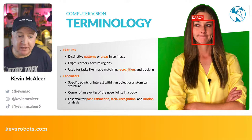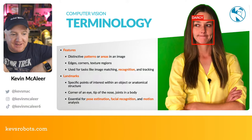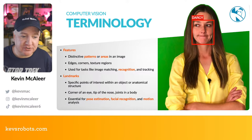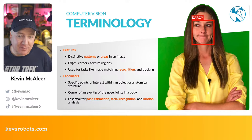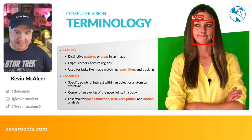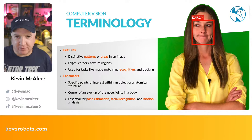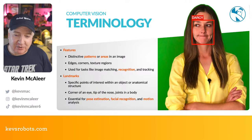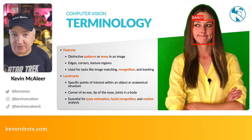'Landmarks' are specific points of interest within an object or anatomical structure - like the corner of an eye, the tip of the nose, or joints on the body. They're essential for pose estimation, facial recognition, and motion analysis. I'm actually working with a company where they've built technology to capture sitting posture through a webcam and make recommendations to avoid back pain - replacing the old clipboard-based desk assessments.